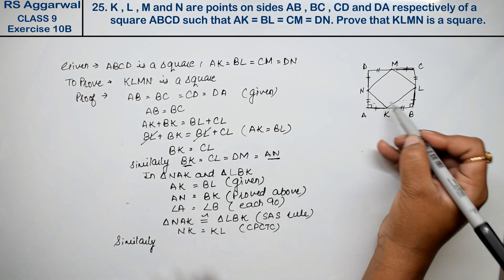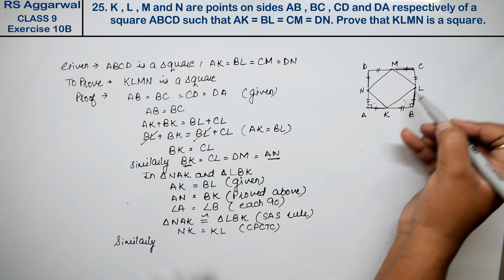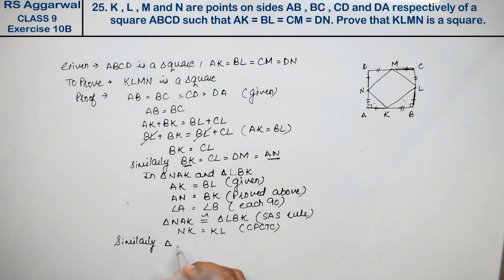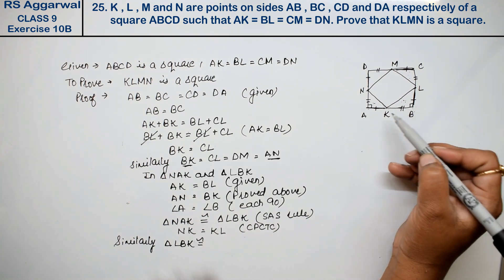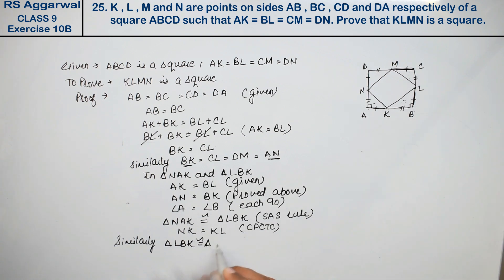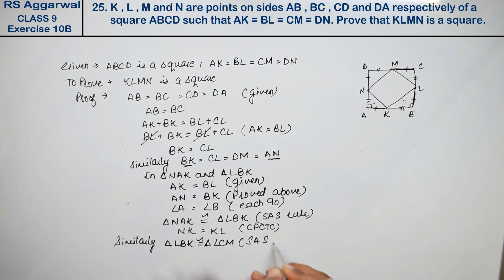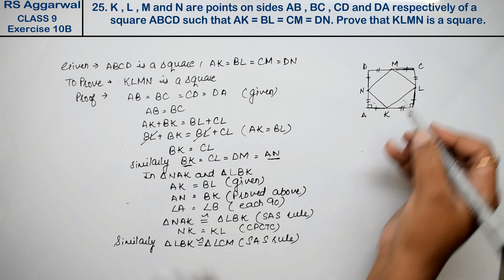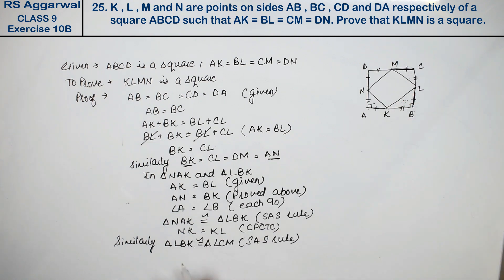Similarly, triangle LBK is congruent to triangle LCM by SAS rule. When these two triangles are congruent, we can say KL equals LM by CPCTC. Right friends.